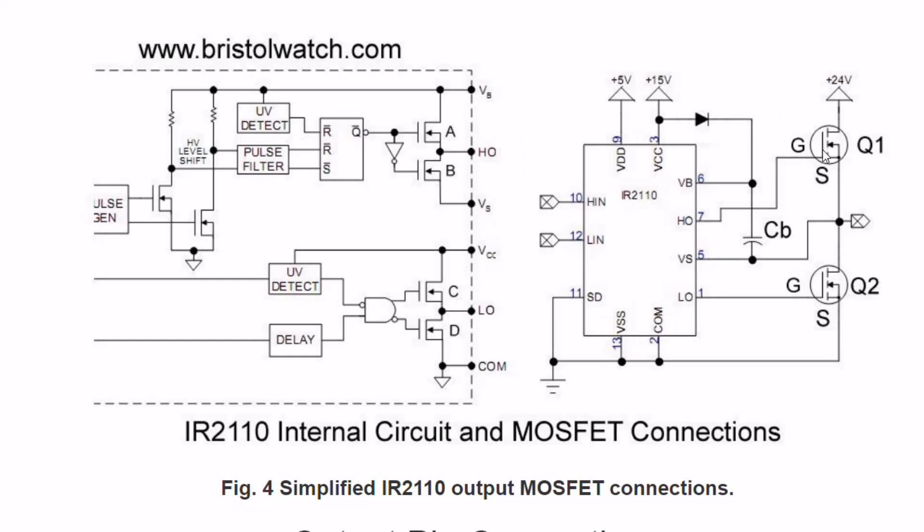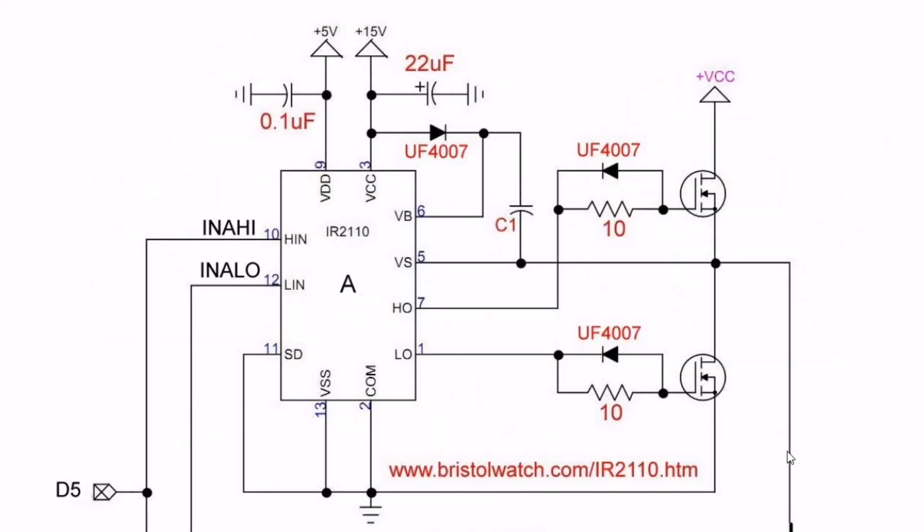This thing will work up to, I think, 100 kilohertz or more. And you need two of these circuits to form a complete H-bridge. As I said before, the complete H-bridge consists of two halves. Both the halves are identical. This is one half A and the other half is B.